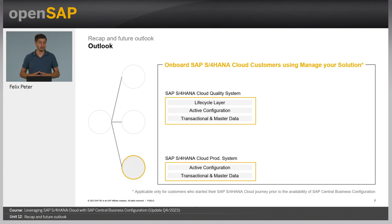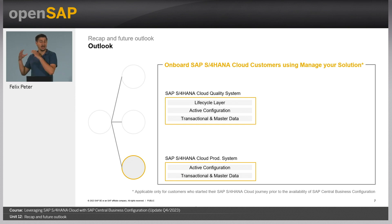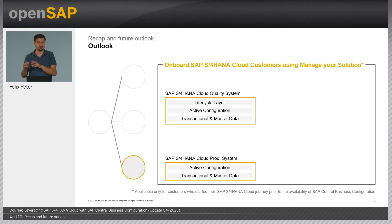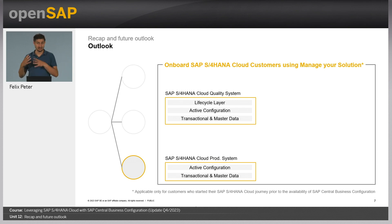Last but not least, let's look at the onboarding of SAP S/4HANA Cloud customers currently using Manage Your Solution. The system landscape these customers currently have includes an S/4HANA Cloud quality system with a lifecycle layer, active configuration, transactional data, and master data — plus a productive system with active configuration and transactional and master data. The important aspect, and a core capability of Central Business Configuration, is the lifecycle layer, where we separate customer adaptations from SAP reference content. This allows us to calculate the delta for each new content version SAP provides and safeguard customer settings from being overwritten.